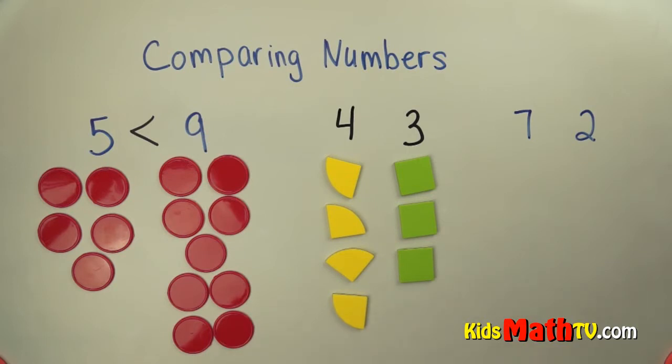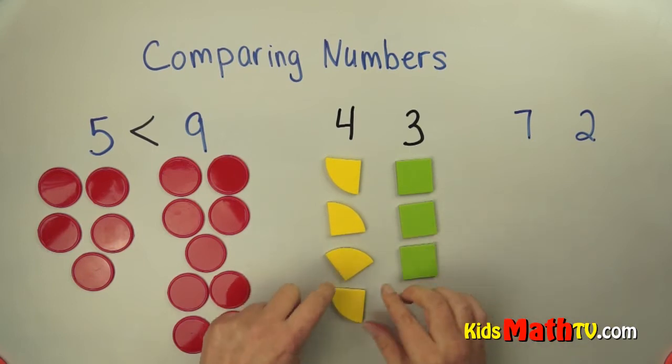Let's look at four and three. We have four of these pizza pieces and three of these pieces. I see these match, these match, and these match.